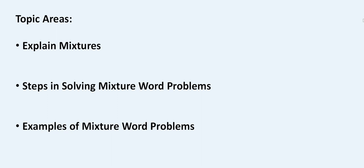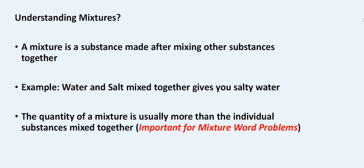What is a mixture? A mixture is a substance that is made after mixing other substances together. A simple example is water and salt mixed together to form salty water — some call it sea water. The important thing to remember is that the quantity of the mixture is usually more than the individual substances mixed together. This concept is going to be very important as we walk through mixture word problems.